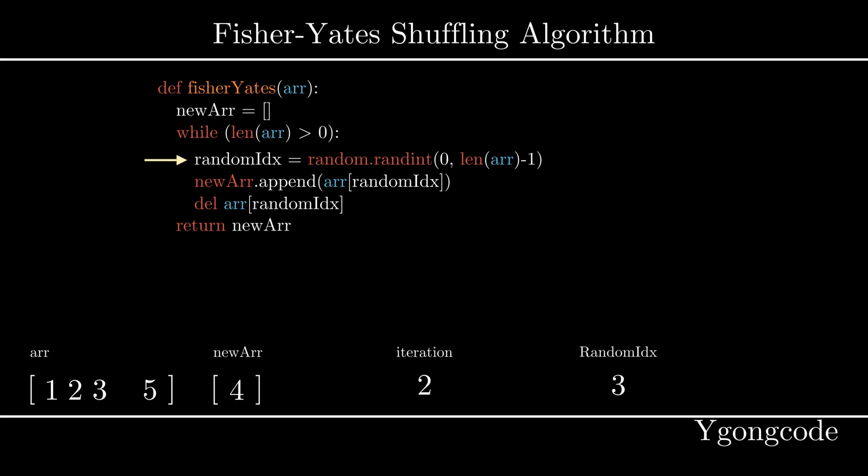On the next iteration, we repeat the same procedure. We randomly generate another index between 0 and 3 and got 2. So we append the third element of the input array into our new array, as well as removing it from our input array.